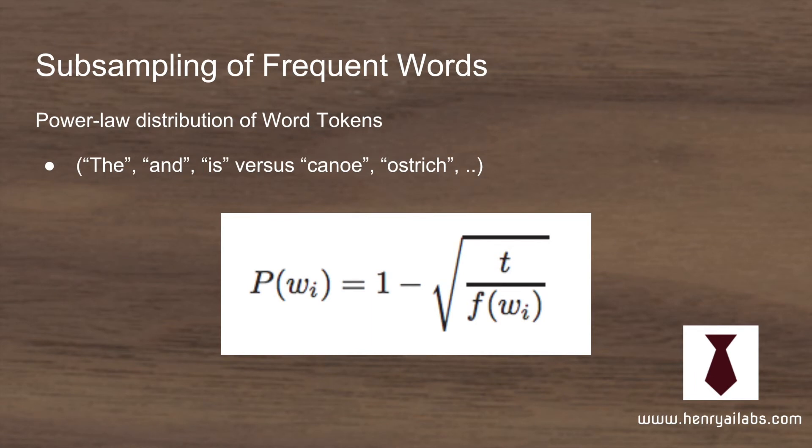The next idea is that the distribution of words in any large word corpus follows a power law distribution, where words like 'the' and 'is' occur all the time, while words like 'canoe' or 'ostrich' almost never occur. To accommodate this, they use a frequency sampling technique that weights the probability of selecting a word for context encoding based on how frequently it occurs.